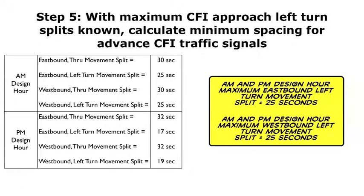Step 5: with the maximum CFI approach left turn splits known, calculate the minimum spacing for advanced CFI traffic signals. There's going to be a direct link based on that left turn movement split for the advanced CFI traffic signal movements. For the AM and PM design hours for this example, a 25-second split is needed based on the AM design hour, and for the PM I'm going to use the same 25 seconds. The AM design hour requires a higher left turn movement split, so that's going to set the geometry, not the lower one.